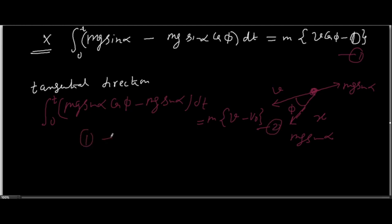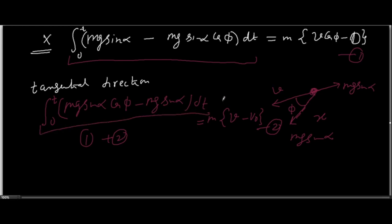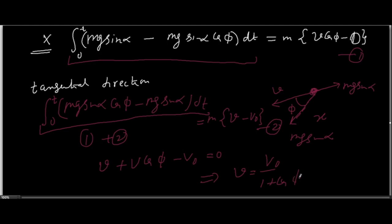The initial velocity along the tangential direction was v₀. So we have two equations — equation 1 and equation 2. Adding them gives a very interesting result: the sum of the left-hand sides is 0, because one part is exactly the negative of the other. The right-hand side gives v + v cos φ − v₀ = 0, since m cancels. Finally, we get v = v₀ / (1 + cos φ), which is the desired result.